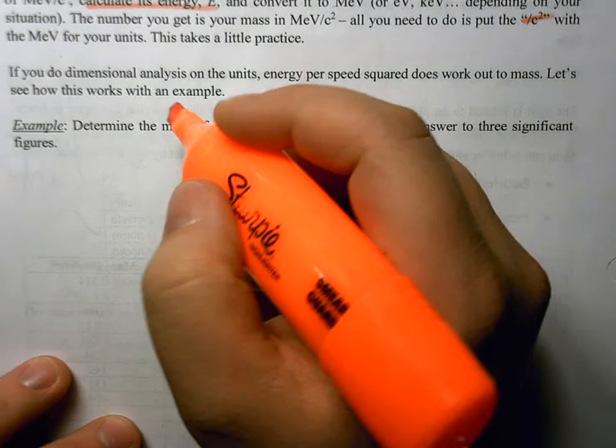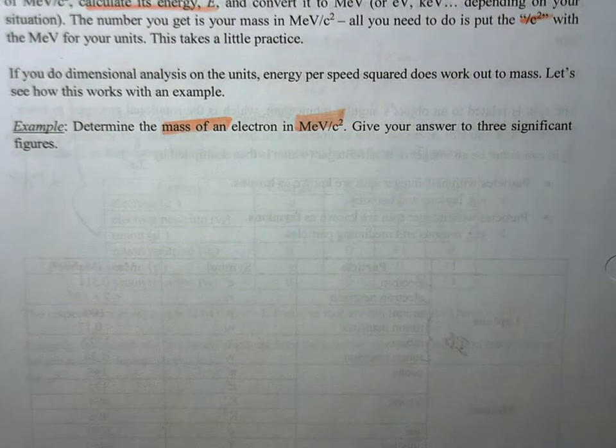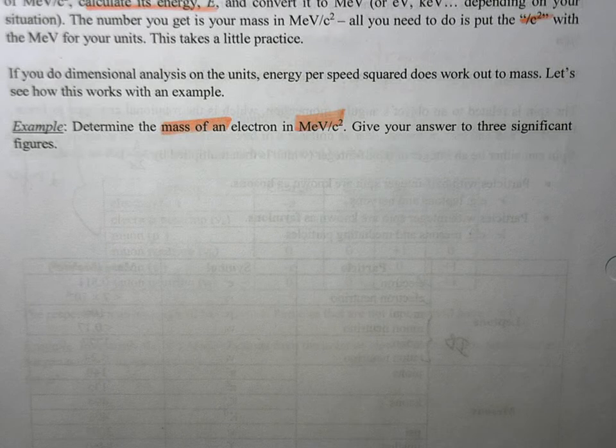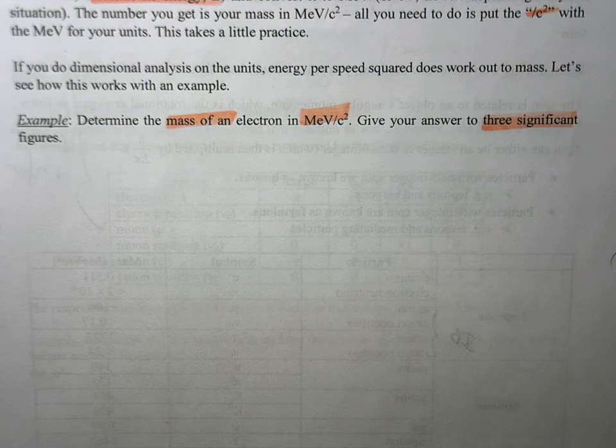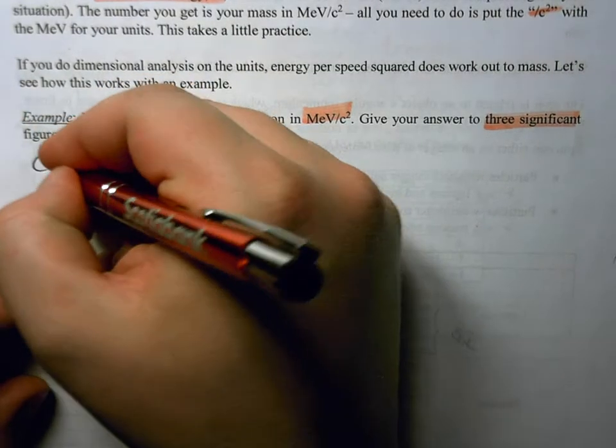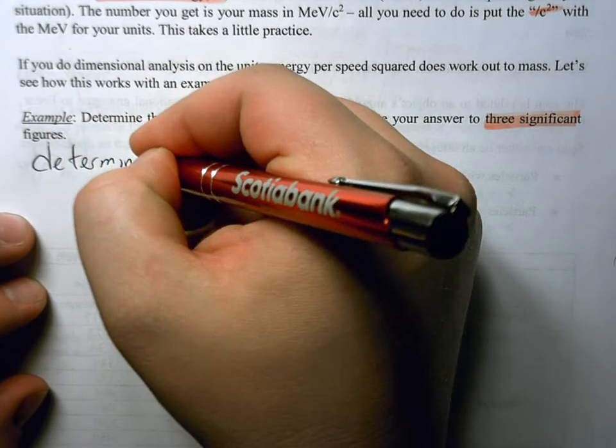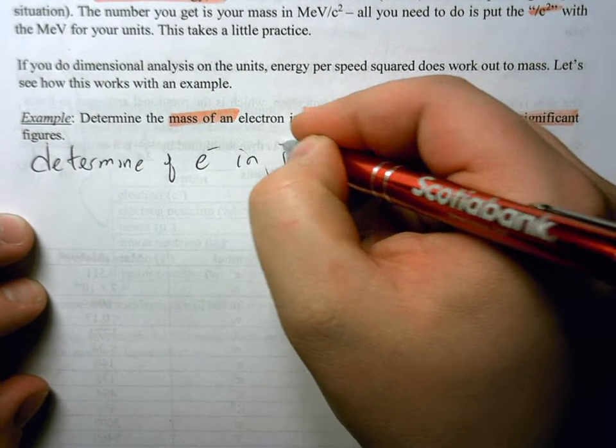So what we want to do is we want to determine the mass of an electron in Mega Electron Volts per C squared. We'll give our answer to three significant digits. So the first thing is determine the energy of the electron in joules.